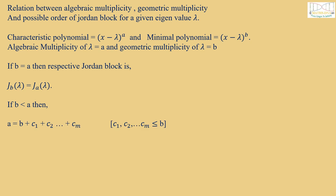But if b is less than a, then we need to equate a = b + c₁ + c₂ + ... + cₘ, where c₁, c₂, and cₘ are less than or equal to b. And respective Jordan blocks are Jᵦ(λ), Jc₁(λ), Jc₂(λ) up to Jcₘ(λ). We will understand this better by the question solution.